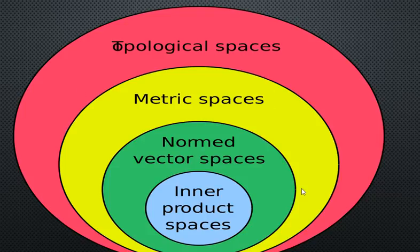We try to understand what metric spaces are and why they are so important. This diagram simply means that every metric space is a topological space, but not every topological space is a metric space. There are also very important kinds of metric spaces called normed vector spaces — a vector space with a norm defined on it.